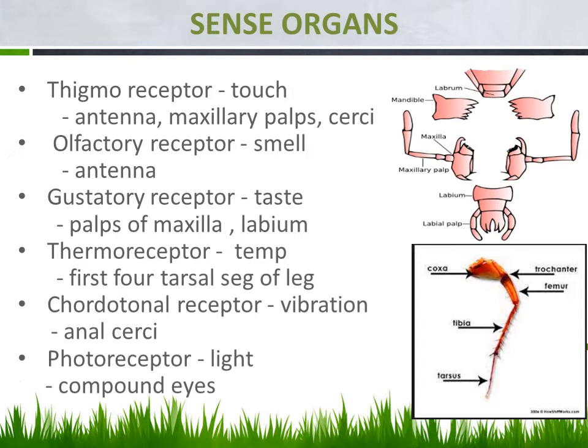The next one is the thermoreceptor, which is responsible for receiving the sense of temperature or heat. This is located in the first to fourth tarsal segments of the leg. The leg segments are: coxa, trochanter, femur, tibia, and tarsus, with five projections in the tarsus. The first four tarsal segments receive the sense of heat or temperature.